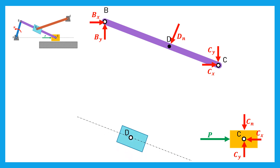We move now to the slider in D. The slider exerts a force DN on the bar BC; thus the bar BC applies on the slider a reaction DN, a similar force but in opposite direction. Also, the slider is connected to the bar DE using a pin joint. Hence, the bar DE exerts two reactions DX and DY on the slider.